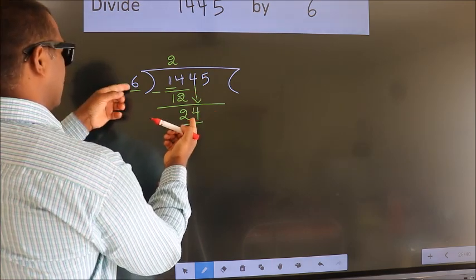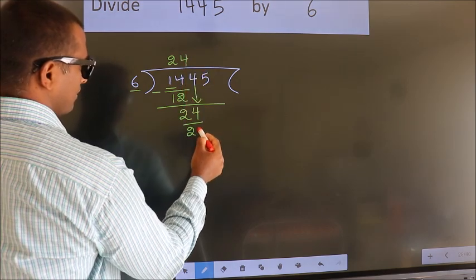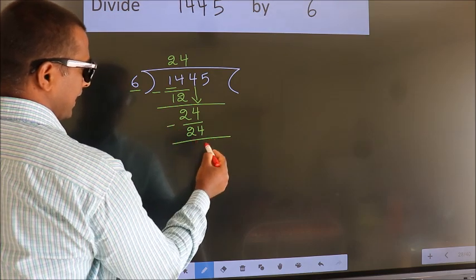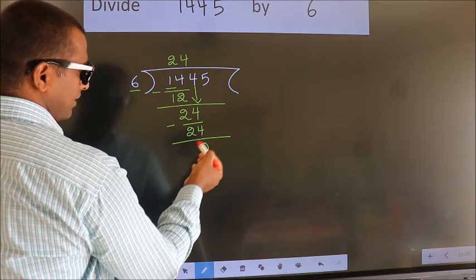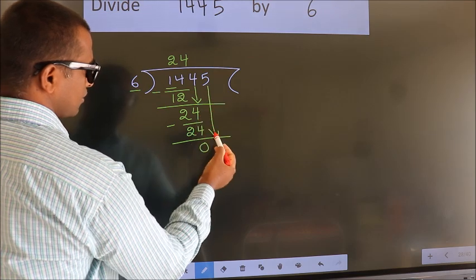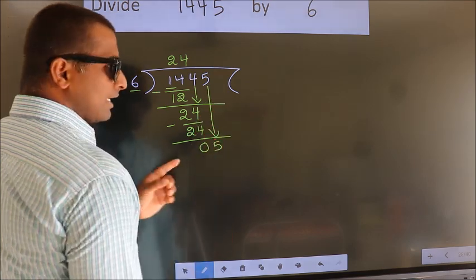When do we get 24 in the 6 table? 6 fours, 24. Now we subtract, we get zero. After this, bring down the beside number, so 5 comes down.